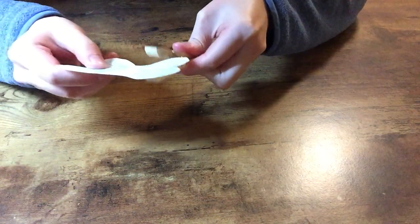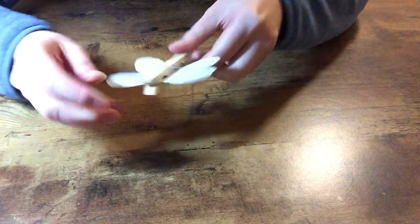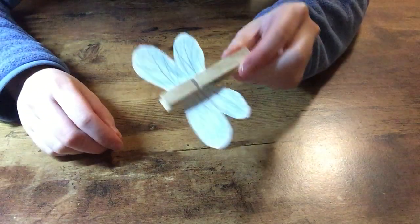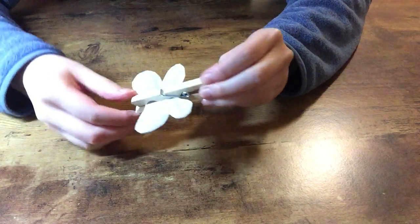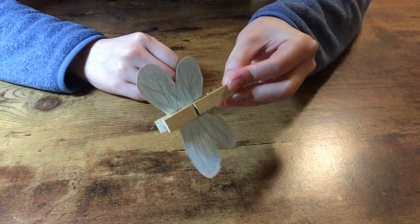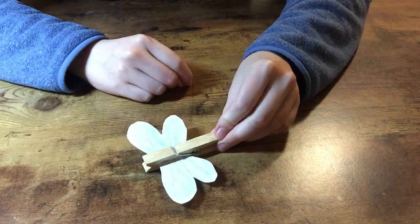Now you see the wings and you put it underneath. It's a dragonfly. You could also paint it or draw some eyes to make it look cuter. But that's it.